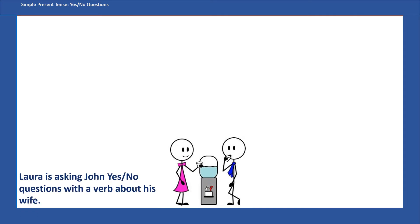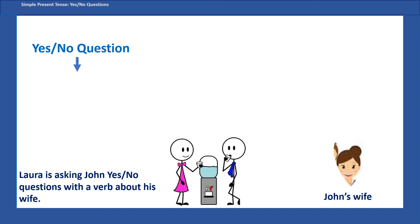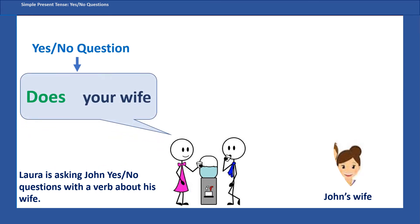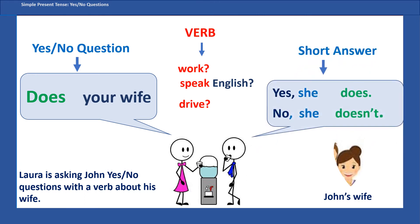Laura is asking John yes/no questions with a verb about his wife. So she needs to use the helping verb 'does.' Does your wife work? Does your wife speak English? Does your wife drive? And John can say 'Yes, she does' or 'No, she doesn't.'